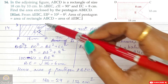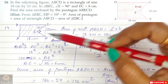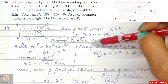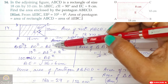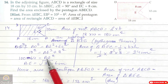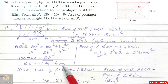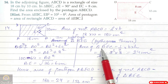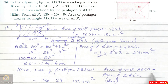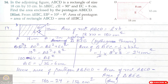Area of triangle BEC = half × base × height = half × 6 × 8 = 24 cm². Therefore, area of pentagon ABECD = area of rectangle ABCD − area of triangle BEC = 180 − 24 = 156 cm². This is the answer.